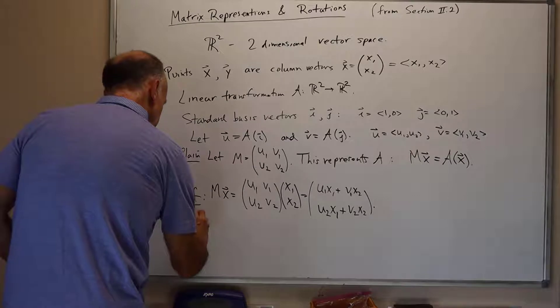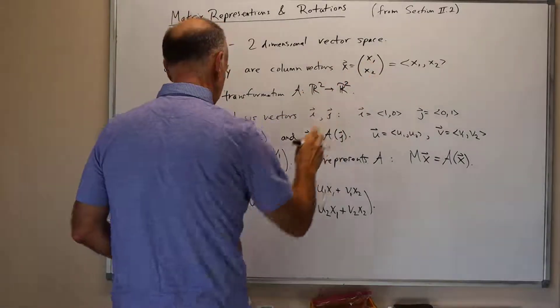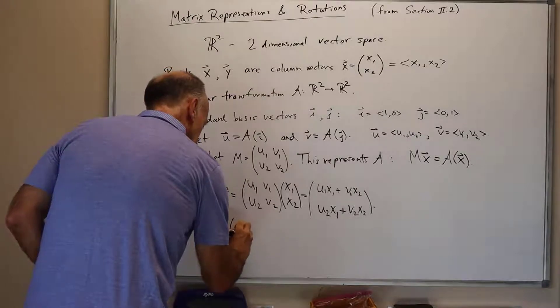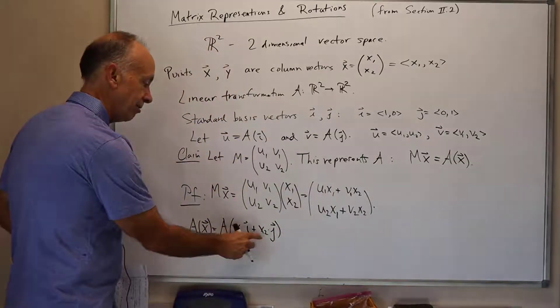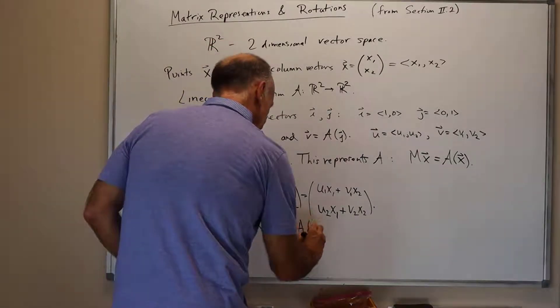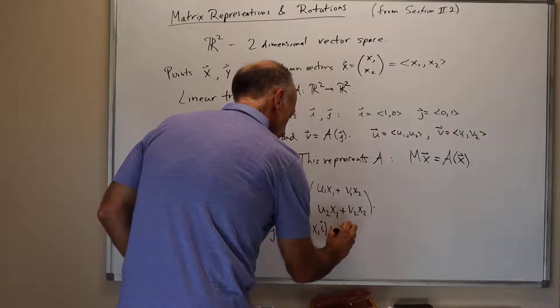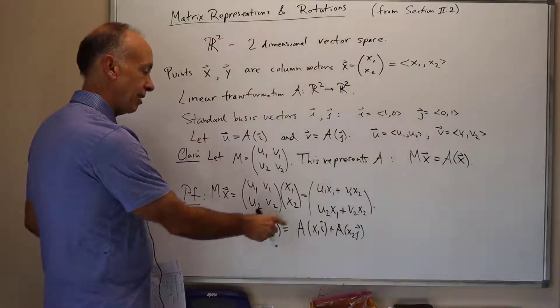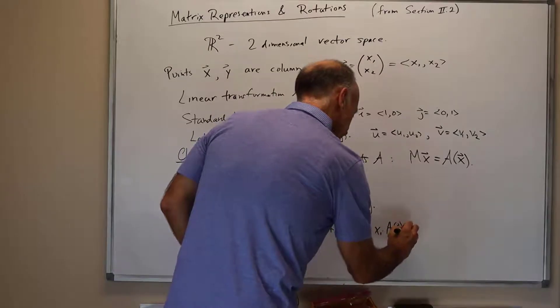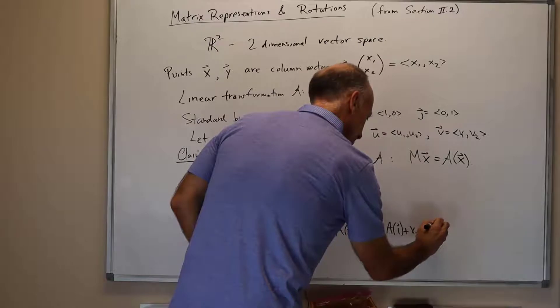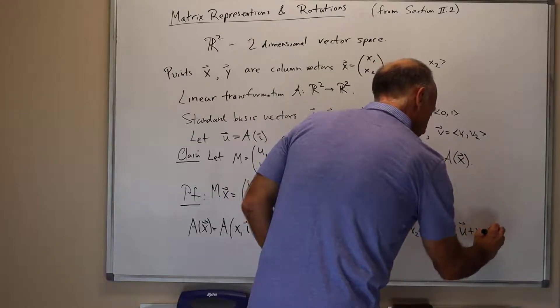On the other hand, A applied to x, we can write x as x1, x2. This is the same as A applied to x1 times the vector i plus x2 times the vector j. x1 and x2 are scalars, i and j are the standard basis elements. By linearity, that's the same as A of x1 i plus A of x2 j, because A applied to a sum is the sum of A applied to the components of the sum. Again, by linearity, that's x1 times A of i plus x2 times A of j. That's equal to, by definition, x1 times the vector u plus x2 times the vector v.